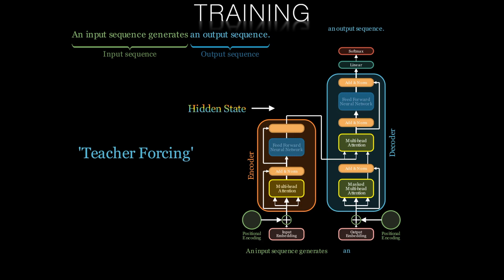We then go again. Now the word we're trying to predict is 'output,' and we now have a longer input sequence. We have the original input sequence of 'an input sequence generates' concatenated with the next teacher forced word 'an.' These are fed into the encoder and decoder as shown.